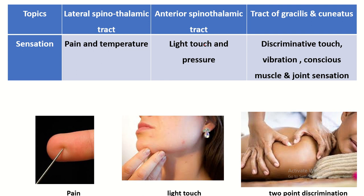This is the location of the tract of gracilis and cuneatus. The lateral spinothalamic tract carries pain and temperature sensation. The anterior spinothalamic tract carries light touch and pressure sensation. The tract of gracilis and cuneatus carries discriminative touch, vibration, conscious muscle and joint sensation.